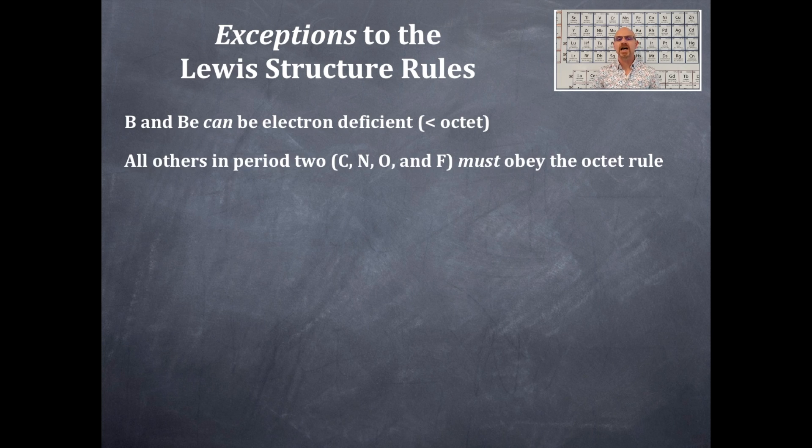All others in period two, that includes carbon, nitrogen, oxygen, and fluorine must obey the octet rule. No questions, those four must obey the octet rule. Make sure it happens, make it so.